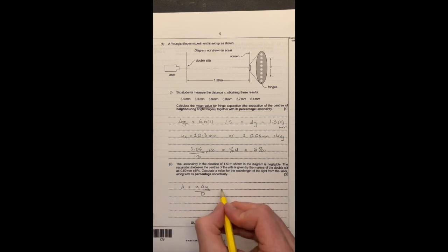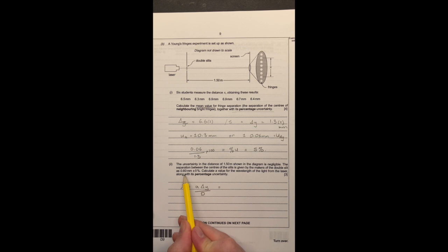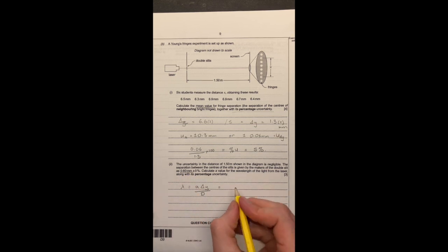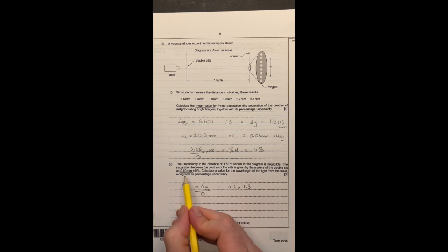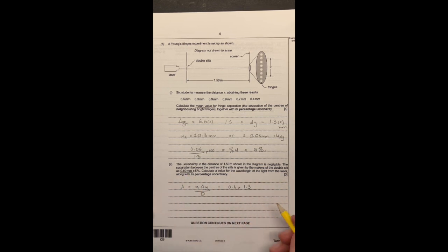We're then going to substitute those values in, so A, I can't find that in the question, should be around here somewhere. Yeah, took me a moment to dig it out from within the text, it's there, so it's 0.6, so that's 0.6, times my fringe separation, which we got from up here, which is 1.3. I seem to be working in millimeters at the moment, so we'll sort that out in a little moment.